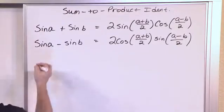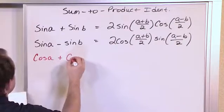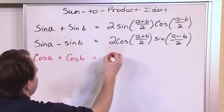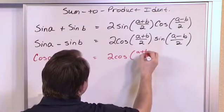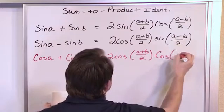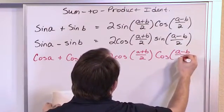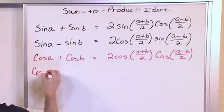Now for the next set we'll have cosine A plus cosine B and that's going to be equal to 2 times the cosine of A plus B over 2 times the cosine of A minus B over 2.